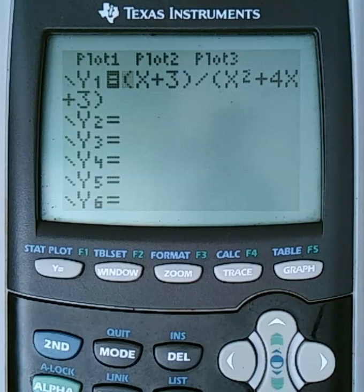So I've got a function here, it is x plus 3 over x squared plus 4x plus 3, and we have been asked to find the limit as x approaches negative 3. Now, if you try to do this by direct substitution, you get 0 on top and 0 on bottom. So we can't do that.